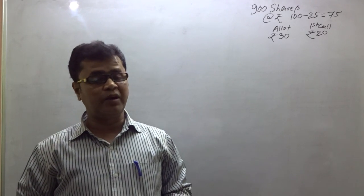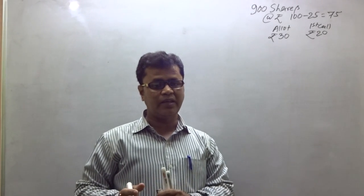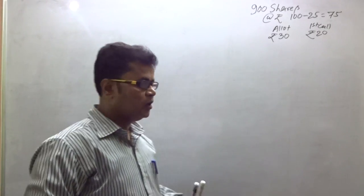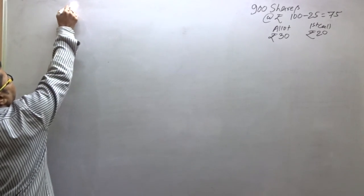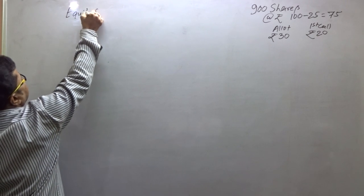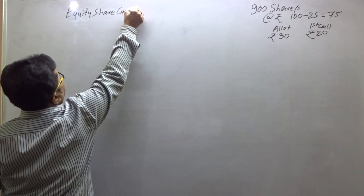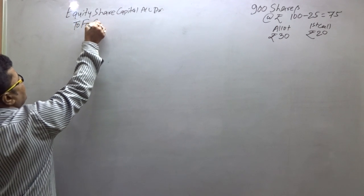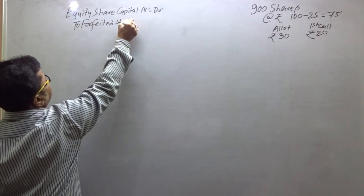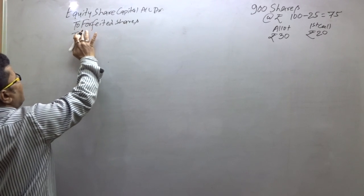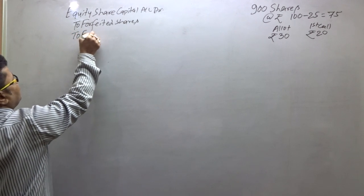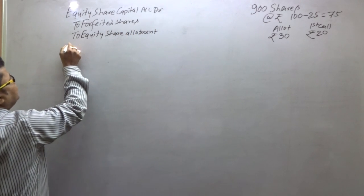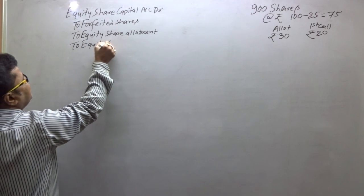Now the company passes the forfeiture journal entry. The entry is: Equity Share Capital Account debit, to Forfeited Shares Account, to Equity Share Allotment Account, and to Equity Share First Call Account.